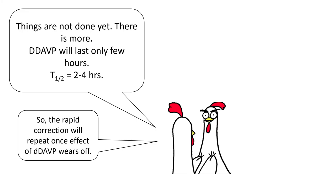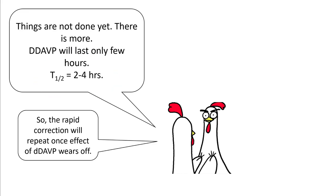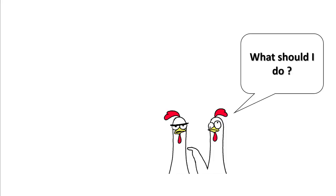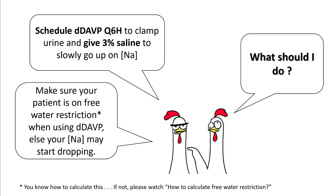DDAVP lasts only a few hours — it has a half-life of two to four hours — so rapid correction will start again once the effect of DDAVP wears off. To make sure you don't run into the same problem in the next couple of hours, schedule DDAVP every six hours to clamp the urine, and start the patient on three percent saline so that sodium may slowly rise. Of course, put the patient on free water restriction while using DDAVP.